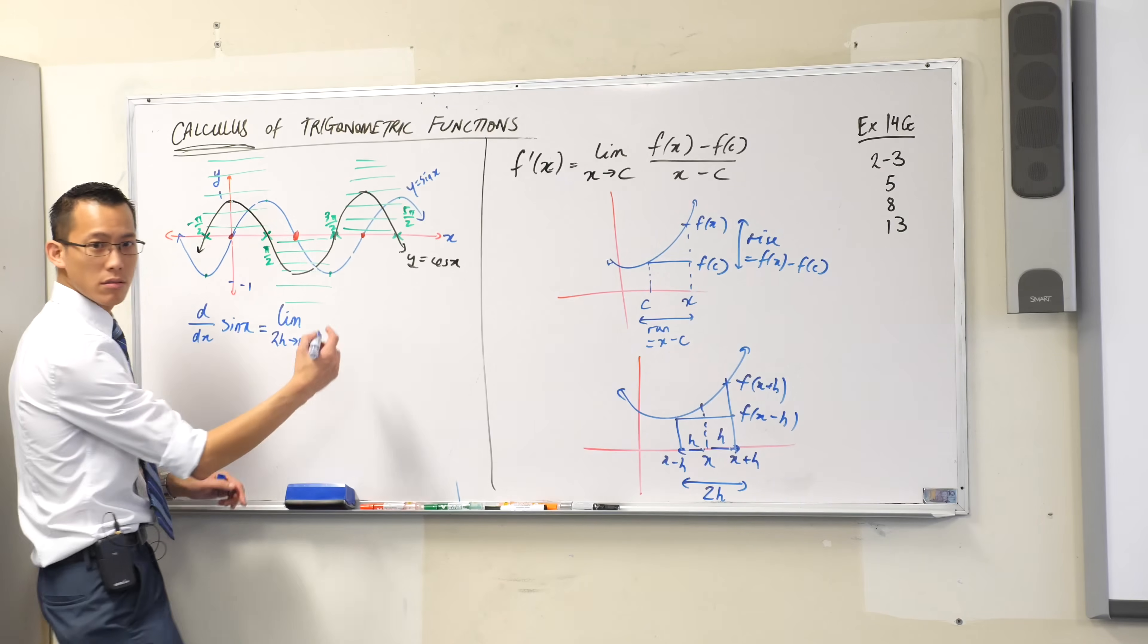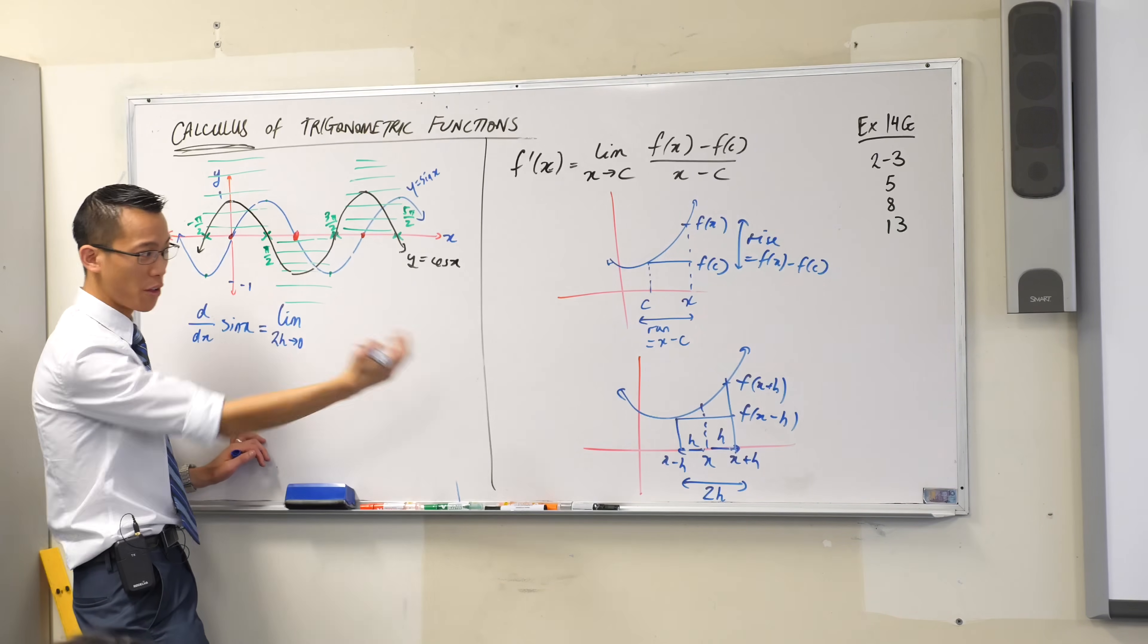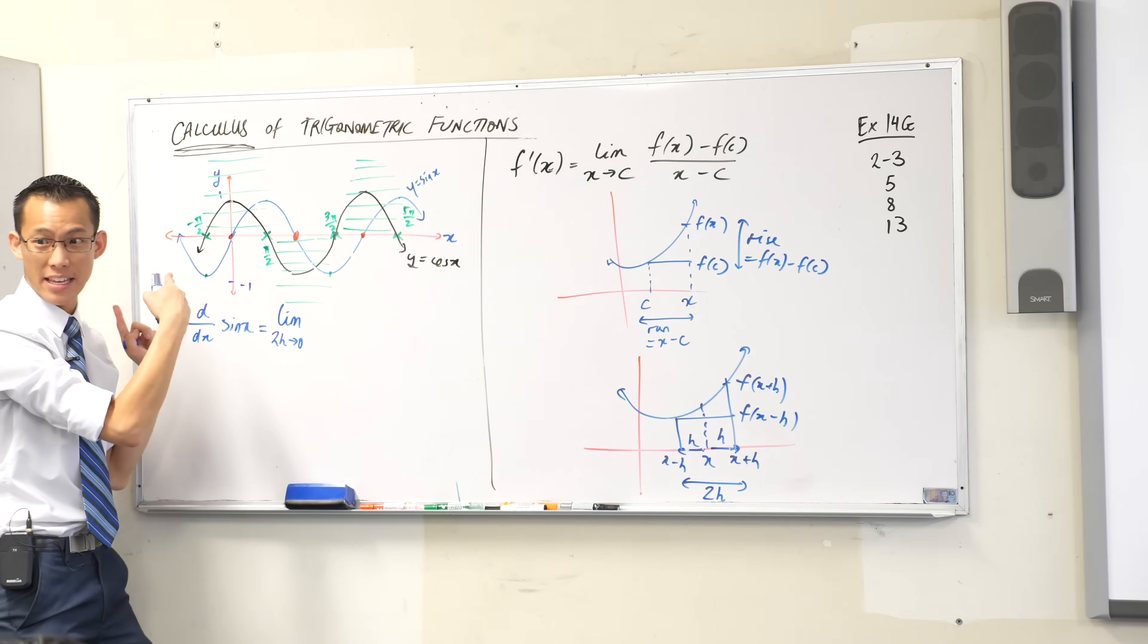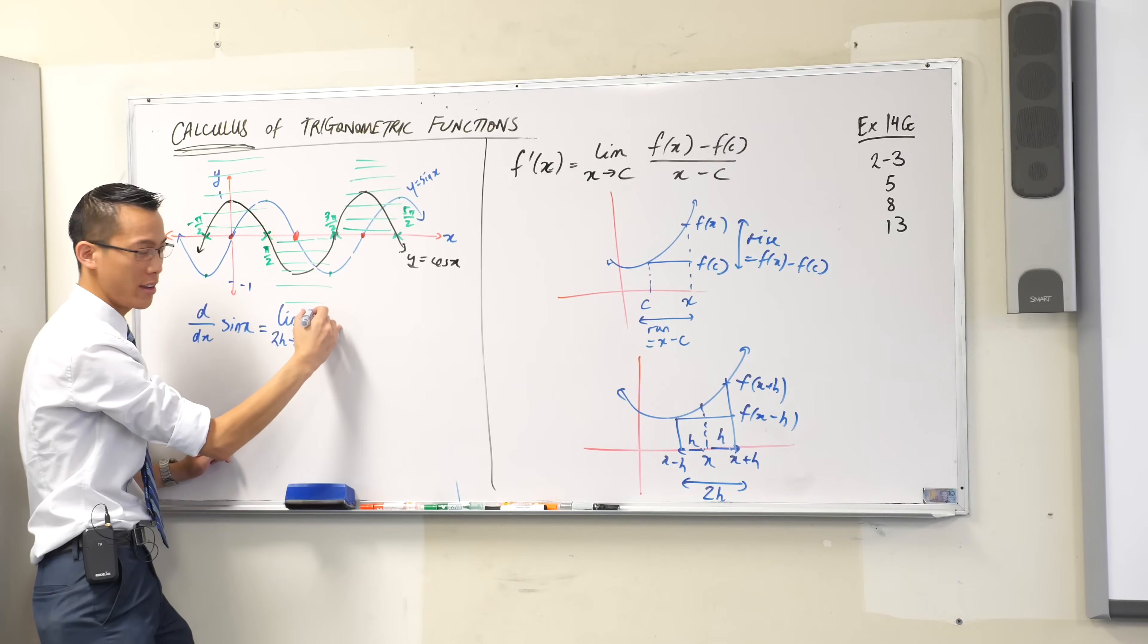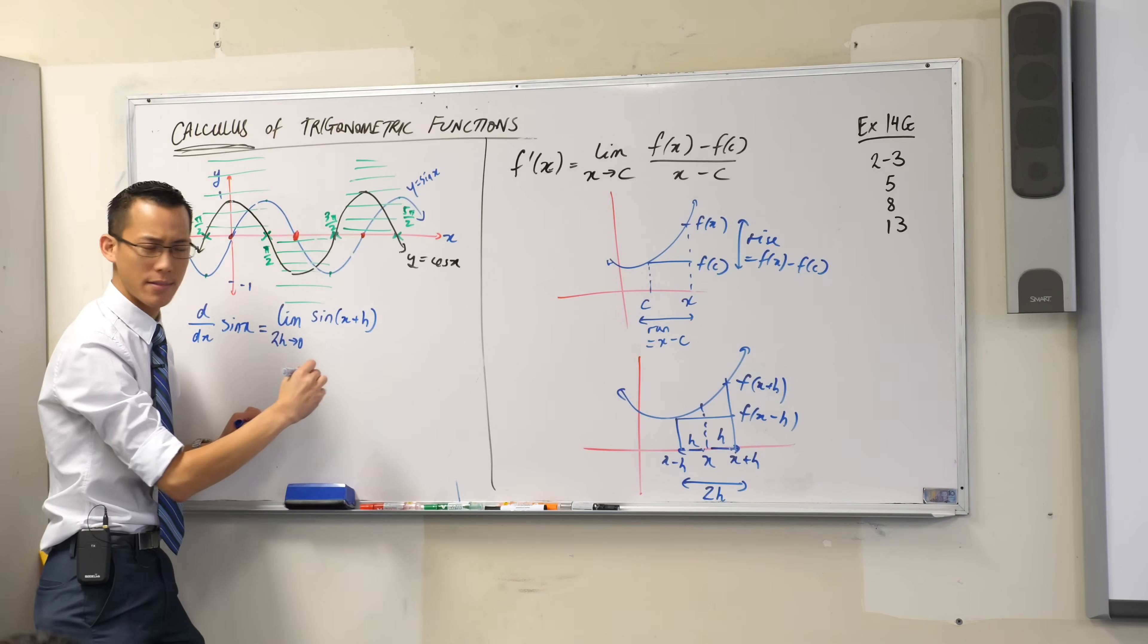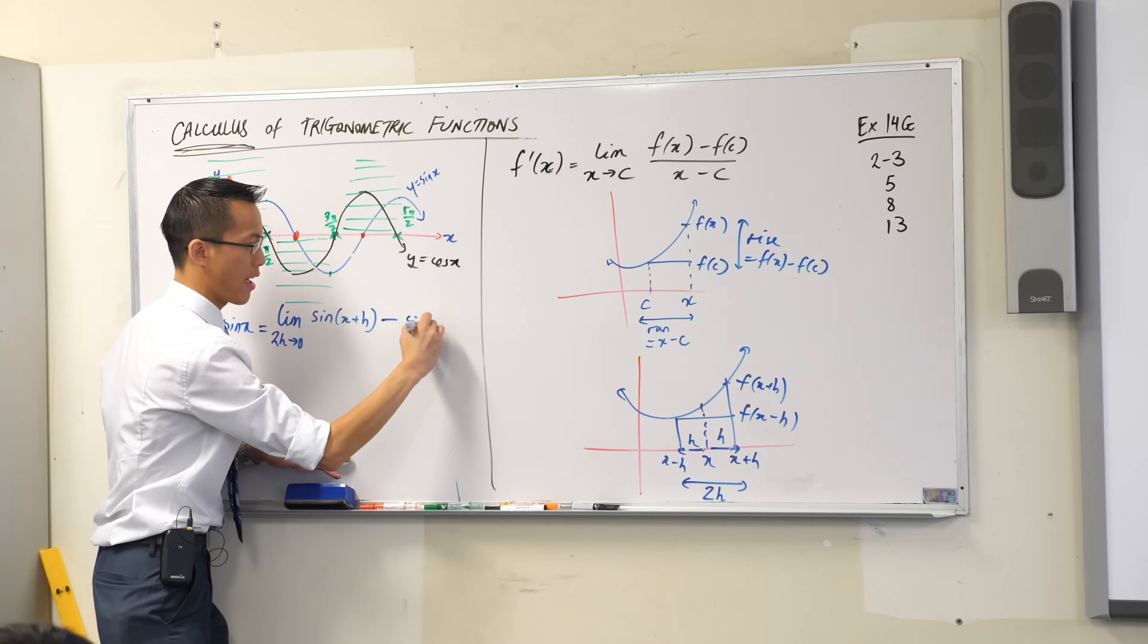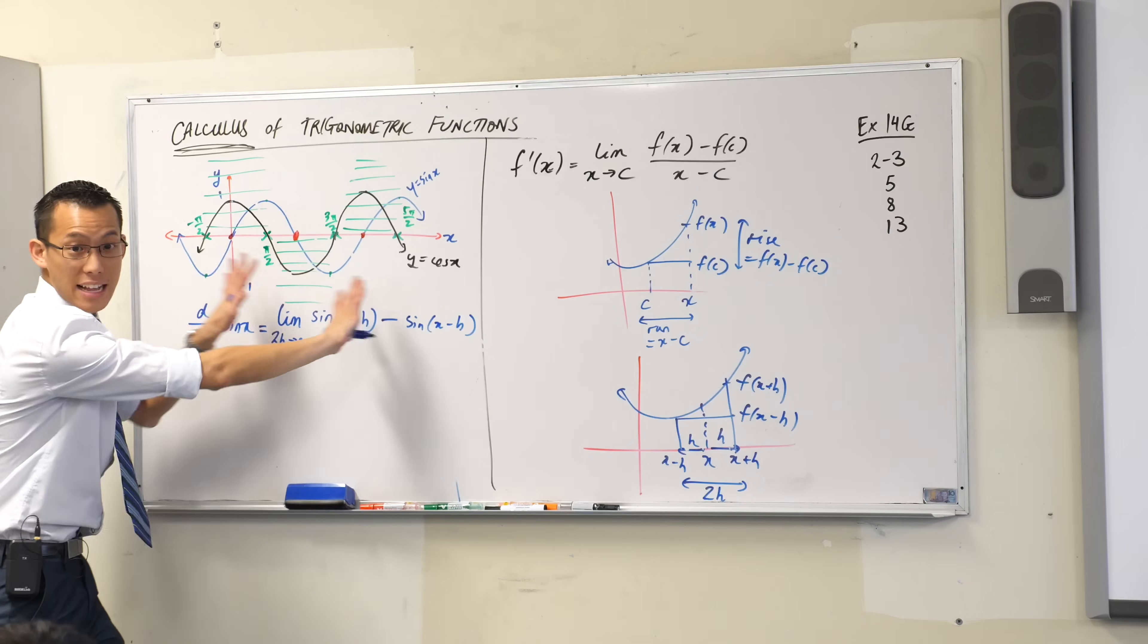What's the rise? Have a look. I'm not thinking about f as a general idea anymore, I'm thinking about a specific function. So the first thing on my numerator will be sine of x plus h. Take away, what's the bottom part for the rise? Sine of x minus h. That's the rise.